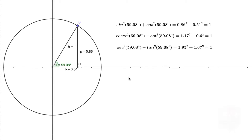Welcome to another demonstration video on trigonometry. We are going to show the three identities: sine square theta plus cos square theta equals one, cosecant square theta minus cot square theta is also one, and secant square theta minus tan square theta is one. We are going to demonstrate how, for every angle, it is independent of the angle chosen.